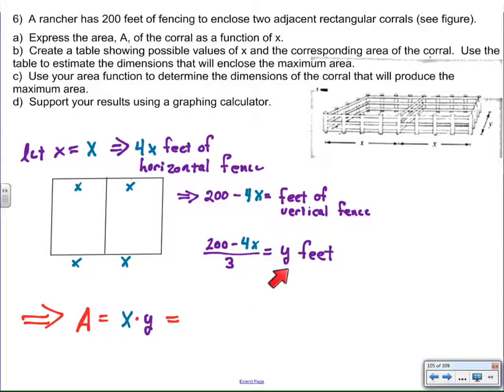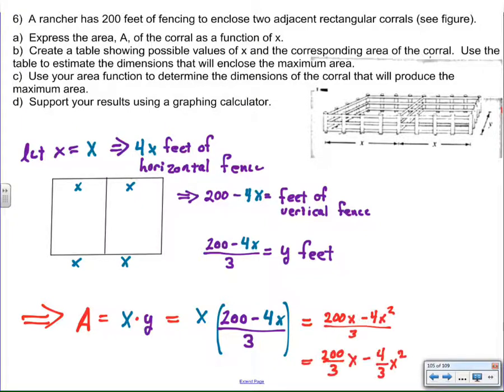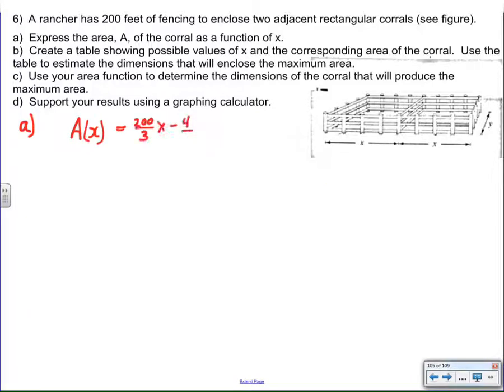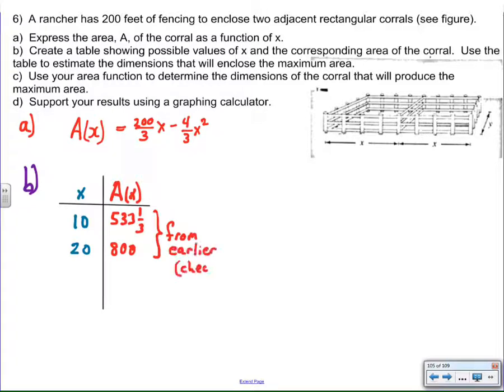So instead of having y as just y, y can now be represented as 200 minus 4x over 3. It's called substitution. So when I have area equals x times y, I really have area equals x times 200 minus 4x over 3. It doesn't look like much, but if I do some cosmetics here by distributing the x and then distributing the one third, I now have a quadratic function. And the good news is I can use the work that I did earlier to help me with part b, which is using the equation to get the areas.